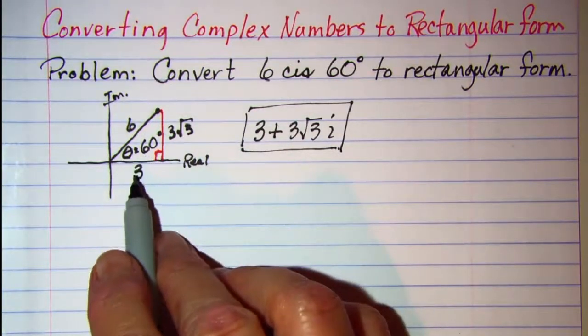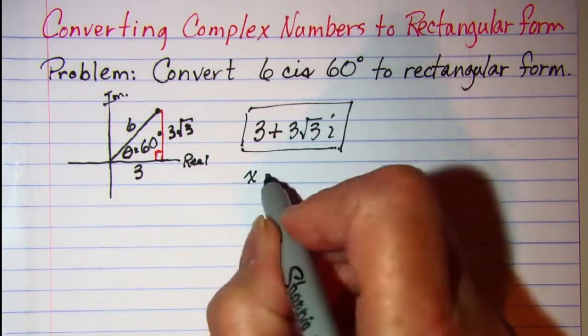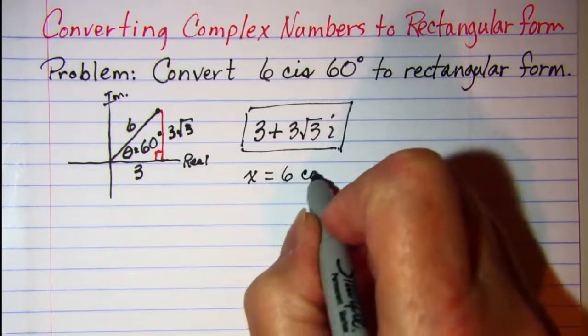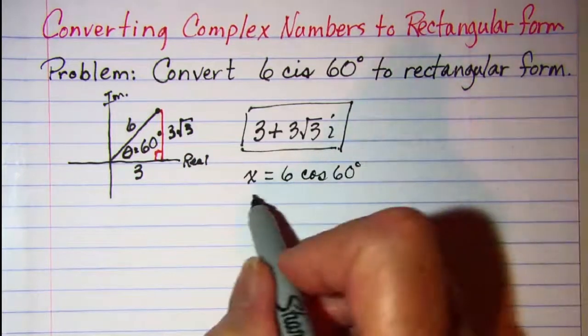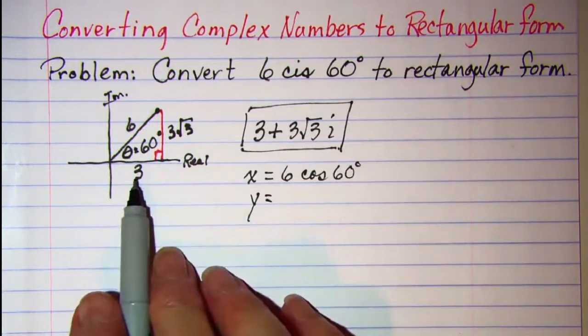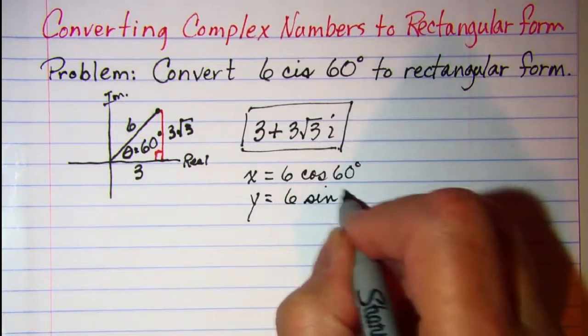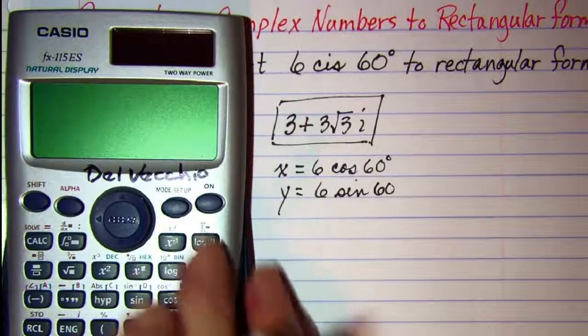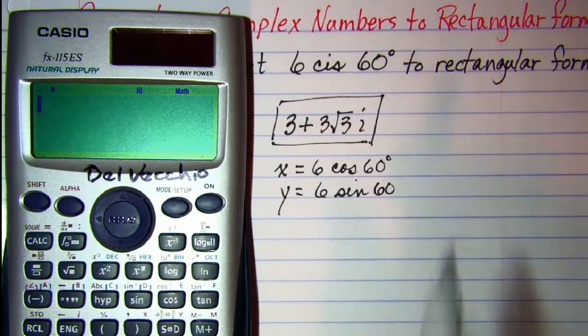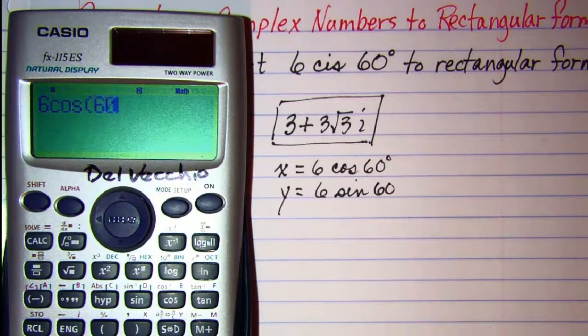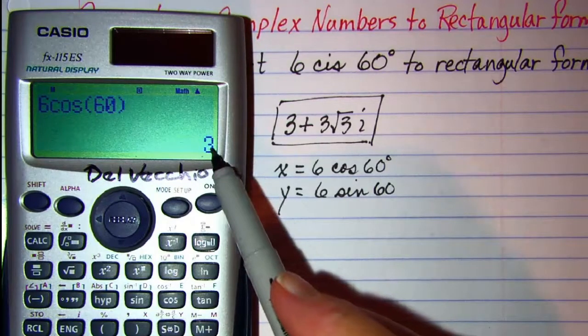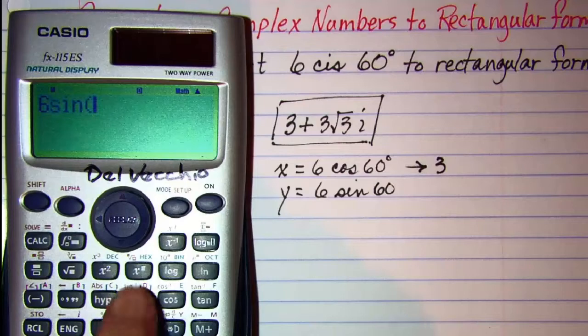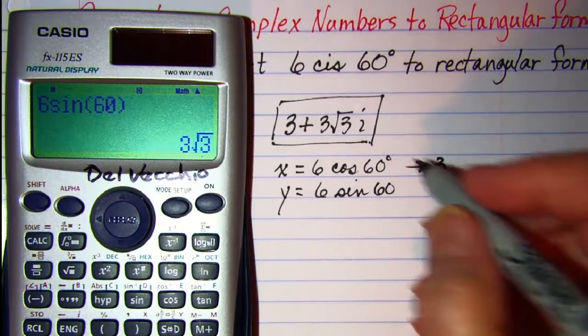Now if this had not been a special triangle, to get our x value we would have used the cosine and we would have said 6 cosine 60, and to get the y value we would have said 6 sine 60. It's the same value: 6 cosine 60 is 3 and 6 sine 60 is 3 root 3.